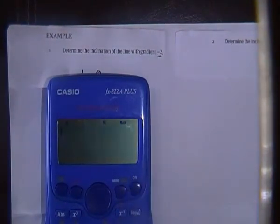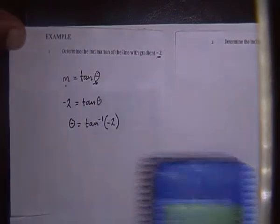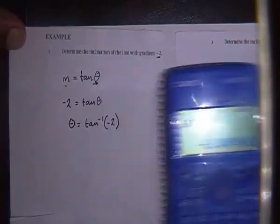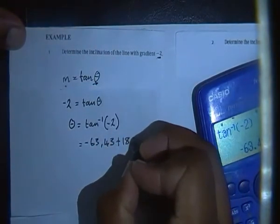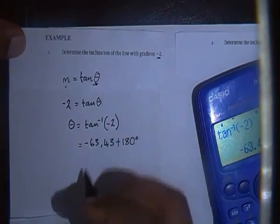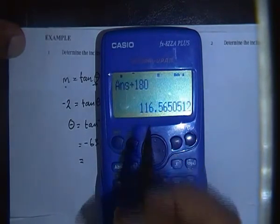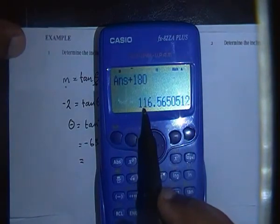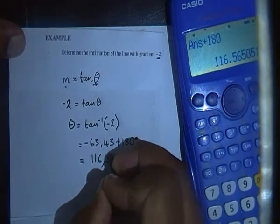Make sure your calculator is in degree mode. Find tan⁻¹(-2), which gives a negative angle: -63.43°. Because the angle is negative, we add 180 degrees — as you'll learn later in trigonometry, the period of tan is 180°. So our inclination angle is -63.43° + 180° = 116.57°.